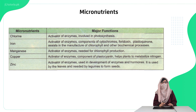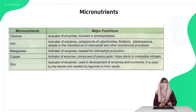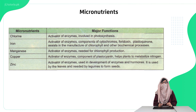Now we talk about micronutrients. The first is chlorine, which acts as an enzyme activator. As we studied in chapter 3 on enzymes, there are some inorganic ions which, if not attached with enzymes, prevent the enzyme from performing its function properly — we call these activators, and chlorine is one of them. Besides chlorine, iron is also involved in photosynthesis and acts as an activator of enzymes including cytochrome, ferredoxin, and plastocyanin, which are major components of the electron transport chain in the photosynthetic chloroplast.